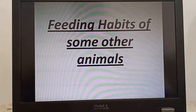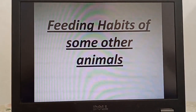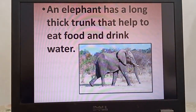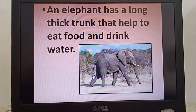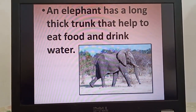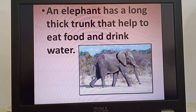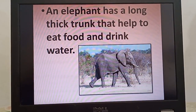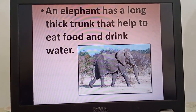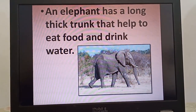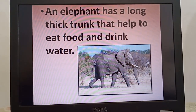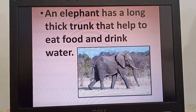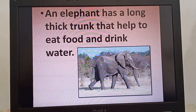Now let's see some feeding habits of other animals. We all have seen an elephant — they have a long thick trunk. An elephant uses its trunk to do various things: to uproot grass, to break off branches and leaves of trees, to push food into the mouth, and also to drink water. Children, they also use the trunk to help shower.